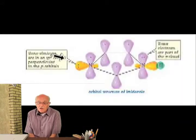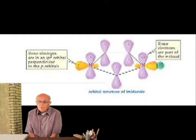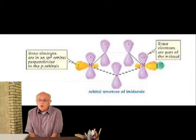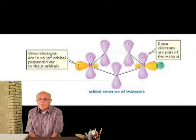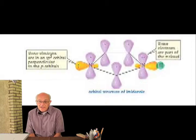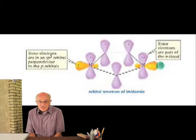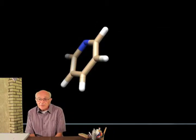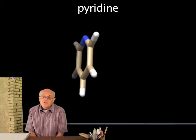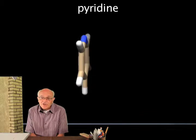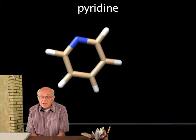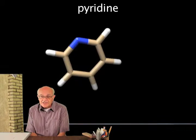Nitrogen does a trick similar to what carbon does. Sometimes nitrogen will form a bond with three other things, but the remaining electrons make an orbital right through the middle of the nitrogen and push the three constituents out onto a flat plane. So nitrogen also forms flat planar structures, and furthermore these flat planar structures can be joined into an aromatic ring.